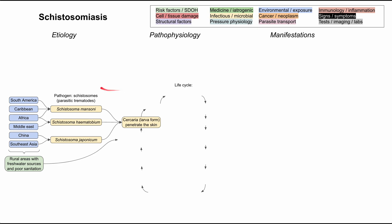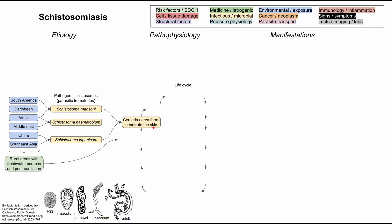Regardless of which schistosome you're infected with, the cercaria — the larval form of the schistosome — penetrates the skin. Looking at the different life stages, the form that penetrates the skin is the cercaria, which is nearly the adult form. Humans are the definitive hosts of schistosomiasis, while freshwater snails serve as an intermediate host.